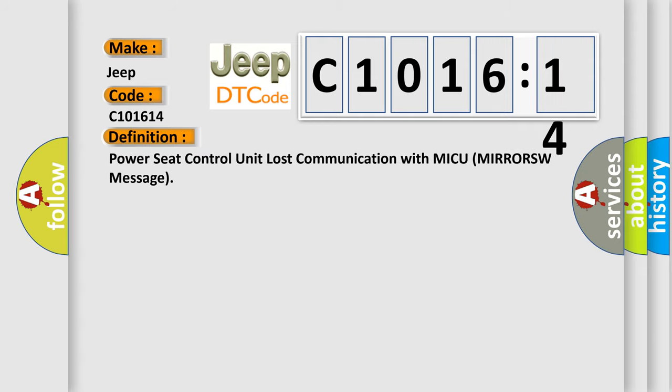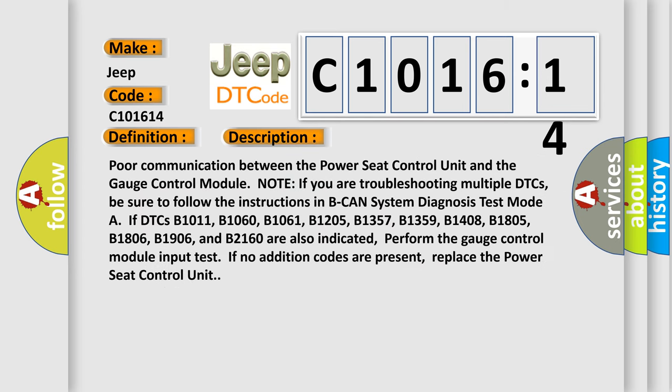The basic definition is: power seat control unit lost communication with MICUMIRORSW message. And now this is a short description of this DTC code.